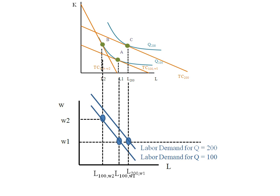What we see is when the wage changes we can trace out one labor demand curve and when the wage stays constant but the firm produces more output that's going to shift our labor demand curve.